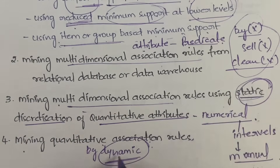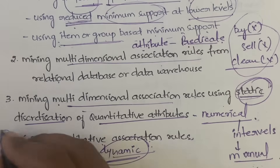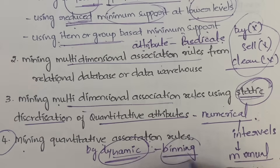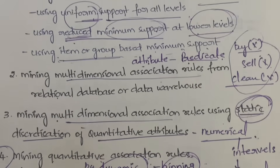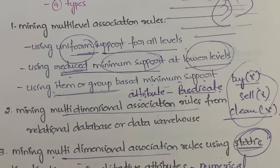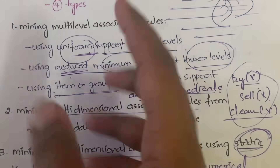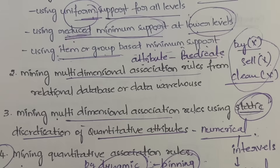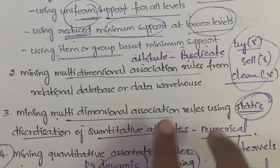Dynamic discretization is more efficient compared to static. Static discretization works only for small datasets, whereas dynamic discretization is more efficient for large datasets. The dynamic method is done with the help of binning. To summarize: we have multi-level association rules and multi-dimensional association rules — in multi-level we have three solutions, and in multi-dimensional we have three cases.